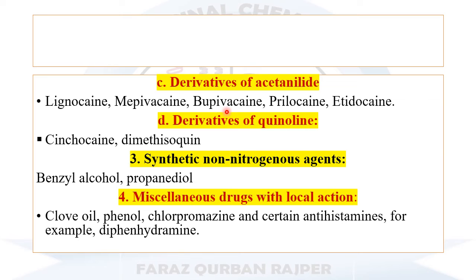The quinoline derivatives of local anesthetics include cinchocaine and dimethisoquin. These basically consist of the quinoline ring in their chemical structure. There are certain other synthetic derivatives that are non-nitrogenous compounds, meaning their structure does not contain any nitrogen atom. Examples are benzyl alcohol and propanediol. So among the synthetic derivatives, the main classes are those containing nitrogen — the quinoline and acetanilide derivatives — and the non-nitrogenous compounds.